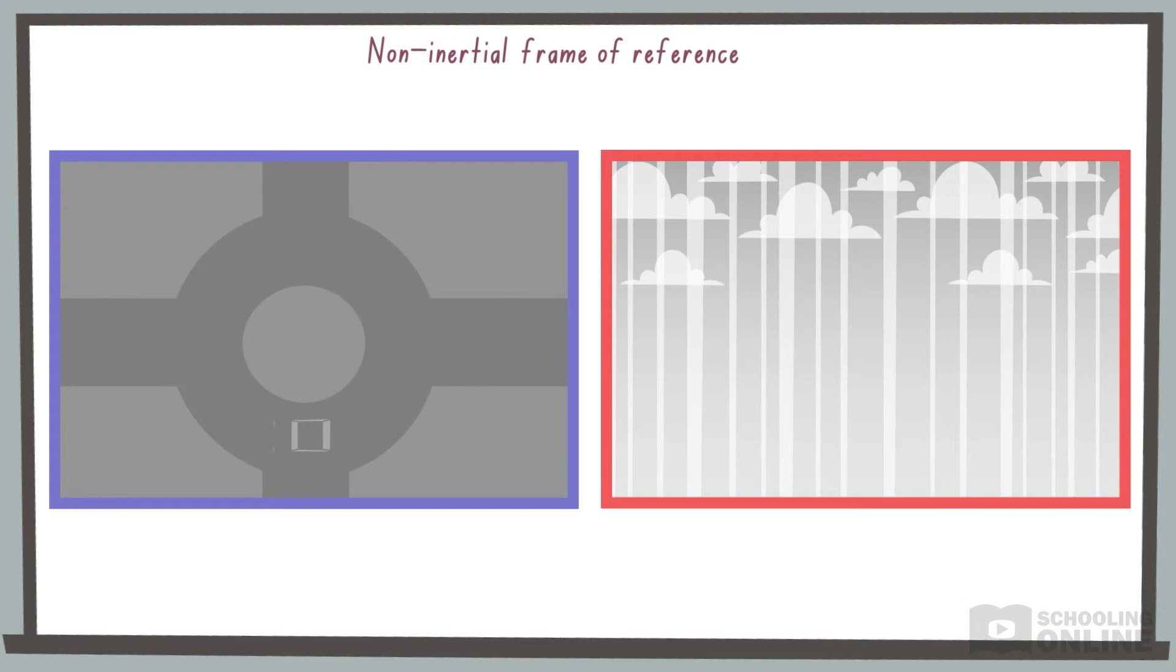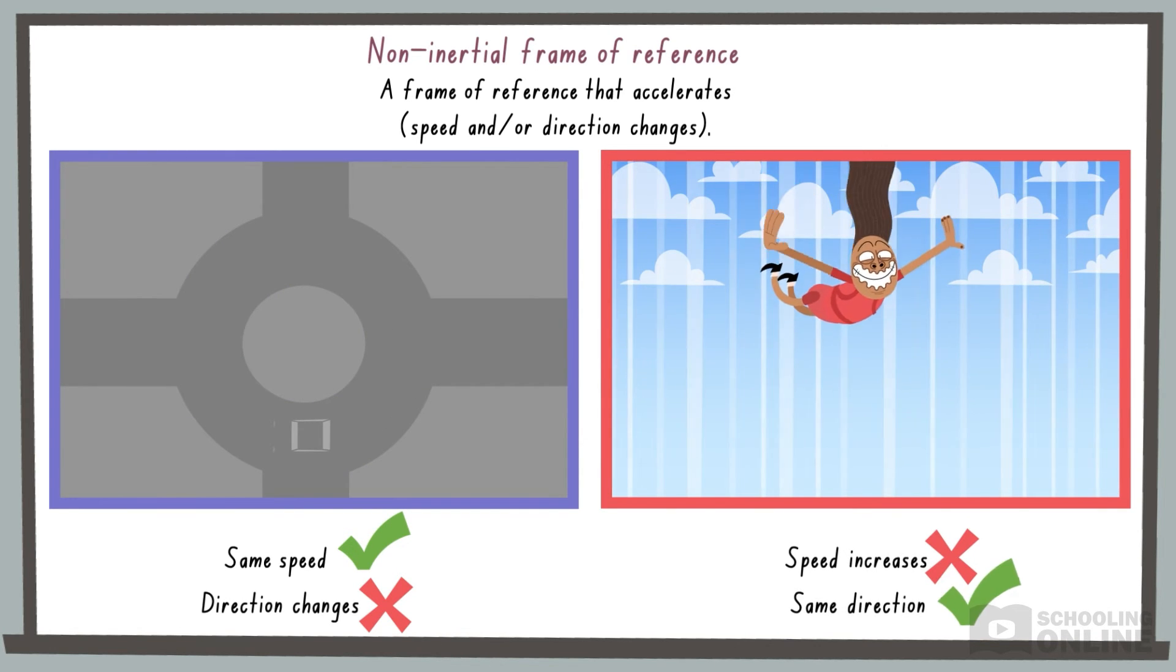Meanwhile, a non-inertial frame of reference is one that accelerates. If you drive around a roundabout, then your direction constantly changes. And if you go skydiving, then your speed constantly increases.